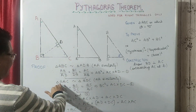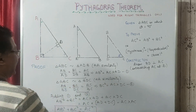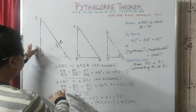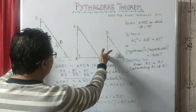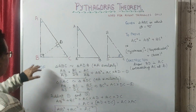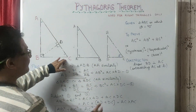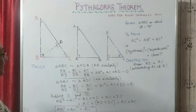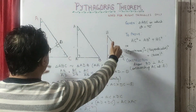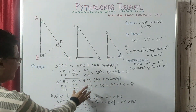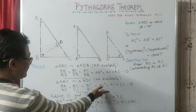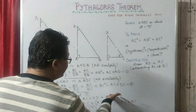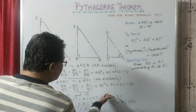Similarly, when we consider triangle ABC and triangle BDC, we get BC over DC equals AC over BC as corresponding sides. From these, we find the value of BC squared: BC squared equals DC into AC. This is our second equation.